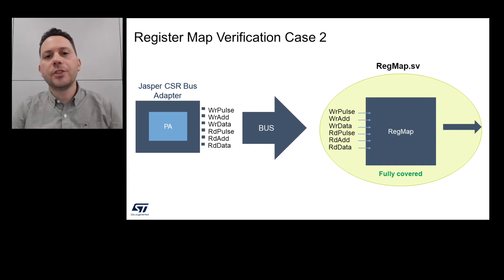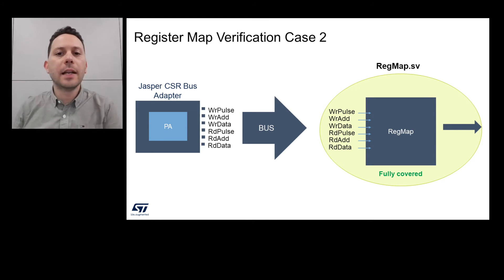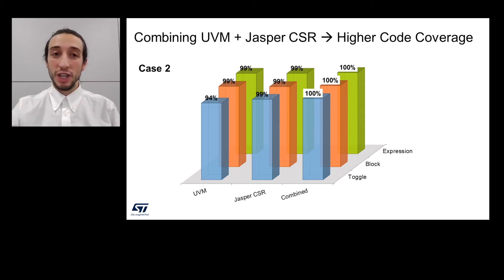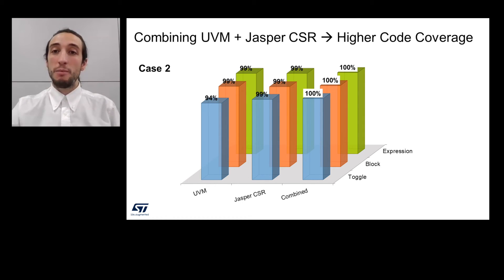We compared Jasper CSR to UVM on two different register maps. Let's look at one of these cases. This is Eduardo Bolea. For code coverage, Jasper stimulated all scenarios and was able to reach and find bugs in some registers that were not stimulated by UVM's dynamic simulations. By combining both methods, we were able to achieve 100% code coverage for this register map.